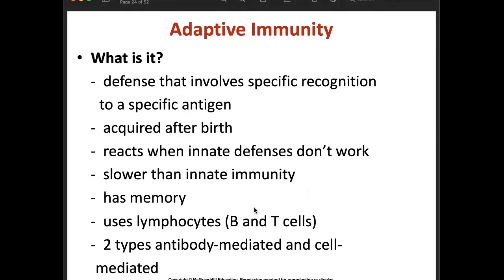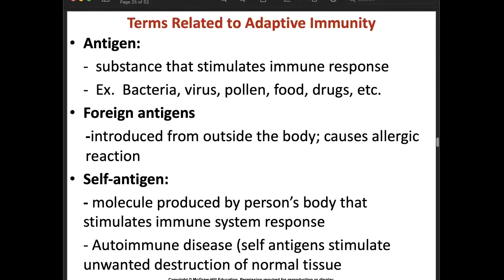Adaptive immunity involves defense with specific recognition of specific antigens, acquired after birth. Unlike innate immunity, which is already present at birth, adaptive immunity is acquired after birth. It reacts when innate defenses don't work, is slower than innate immunity, has memory, and uses lymphocytes — your B cells and T cells — through two types: antibody-mediated and cell-mediated immunity.